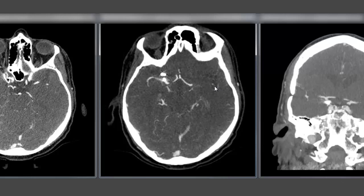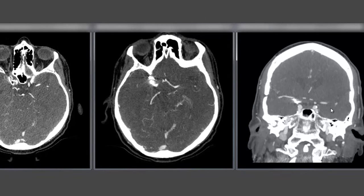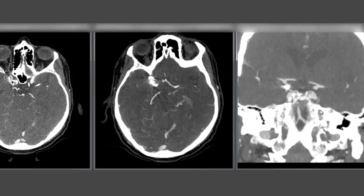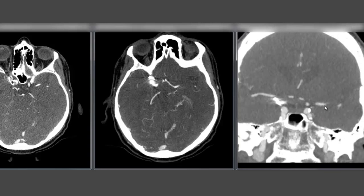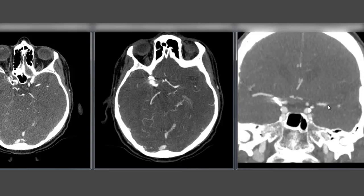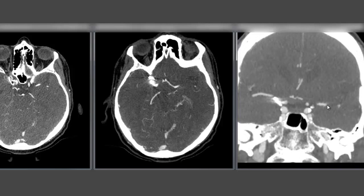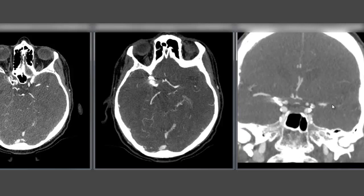Again we see some distal reconstitution in the sylvian fissure. And the same thing on the coronals — the carotid terminus, zooming in: A1, M1, and cutoff. Make sure to scroll fully through the stack to confirm there is no branch coming off at a sharp angle that you might miss. In fact there is none — it's just a hard cutoff from the clot causing this patient's stroke.